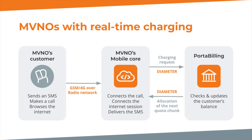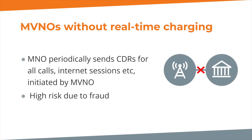Now let's consider an example of a service provider MVNO with real-time charging. This means that for every activity, such as a customer connecting to browse the internet or making a phone call, a charging request is sent to the MVNO system. The other option without real-time charging means that the mobile operator that hosts the MVNO periodically sends over files containing CDRs for calls, internet sessions, etc., initiated by MVNO customers. These CDRs are imported into Porta Billing or another BOSS system on a regular basis. The offline charging bears significant risks of revenue loss because of fraud, so it's not recommended.